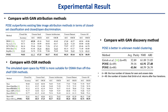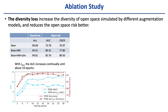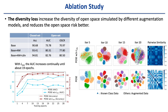Our method is also superior to off-the-shelf open set recognition methods, which indicates that the simulated open space by POSE is more suitable for open set model attribution. We also compare with a recently proposed GAN discovery method, and the result shows that POSE is better in unknown model clustering. In the ablation study, applying augmentation models in training largely increases open set recognition performance. Applying the diversity loss brings further improvements. We plot open set recognition performance along training epochs: without the diversity loss, performance converges at early epochs, whereas with the diversity loss added, performance increases continually until about 19 epochs. Feature-space visualization shows the diversity of open space simulated by different augmentation models is largely increased when the diversity loss is applied.